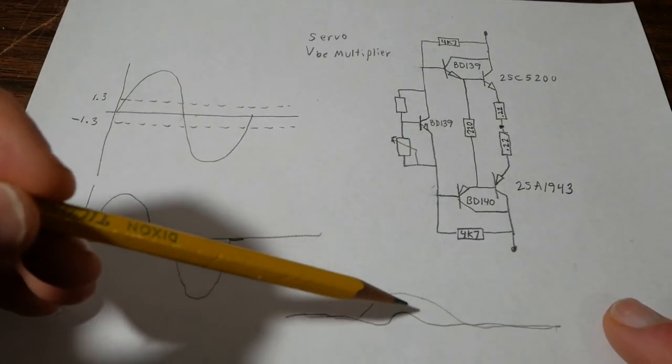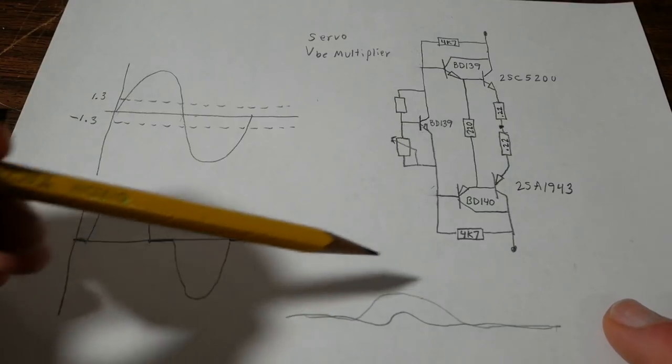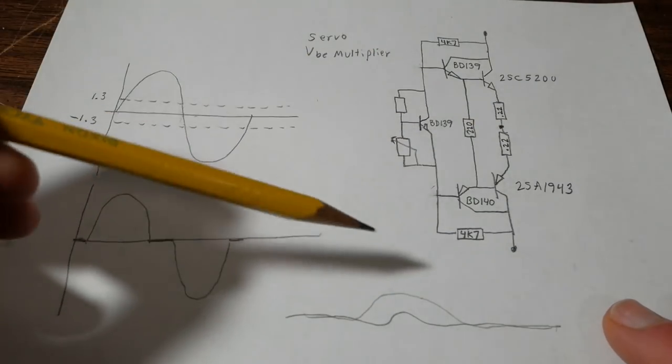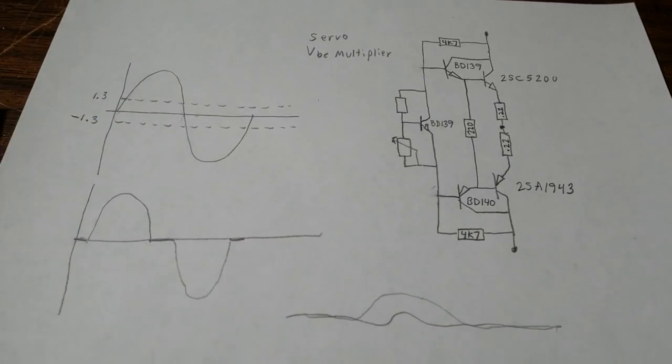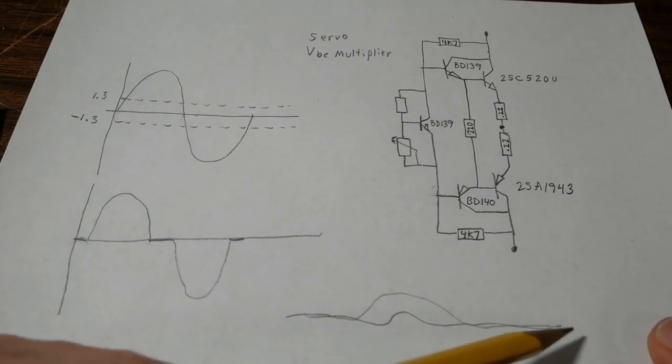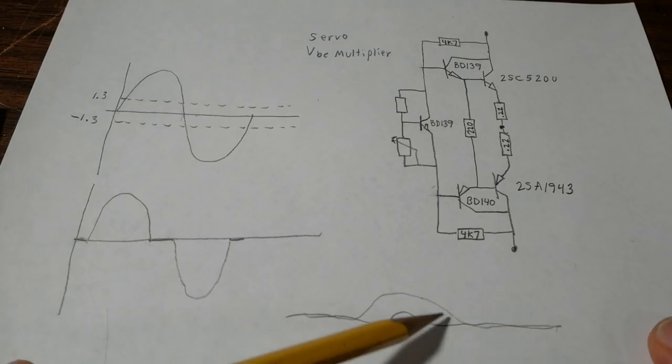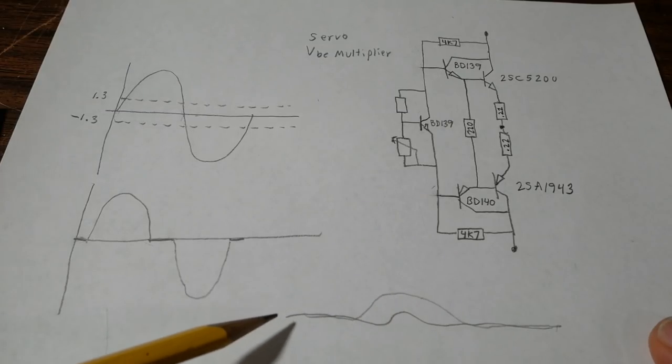You want to have the minimum amount of distortion in the circuit before you apply negative feedback. So keeping the distortion as low as possible is recommended. So if you set the gain at an optimum level you won't have that problem with GM doubling.